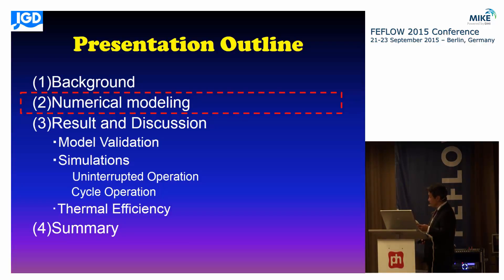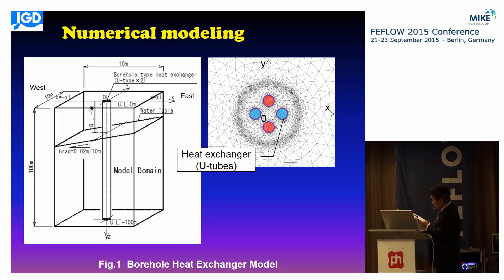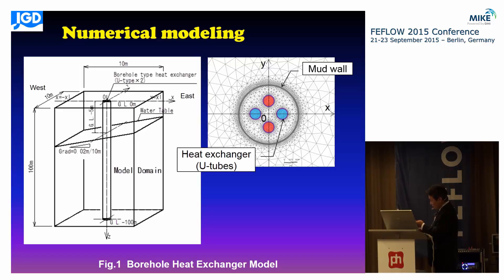I would like to explain the numerical model. The model is able to consider the effects of mud wall existence. Figure 1 shows the numerical model. Dimensions of X, Y, Z are 10m, 10m, and 100m depth. The top face is the ground surface at the center of the model domain. Borehole shapes and heat exchanger pipe shapes are represented. In order to estimate the insulation effect of the mud wall, the mud wall is considered along the outer borehole. The ground is assumed to be homogeneous and isotropic material.